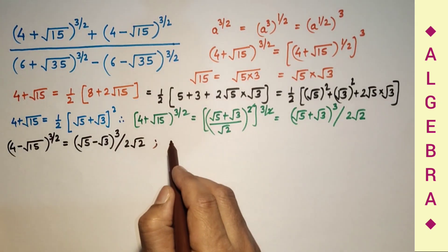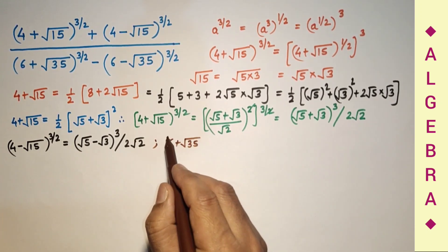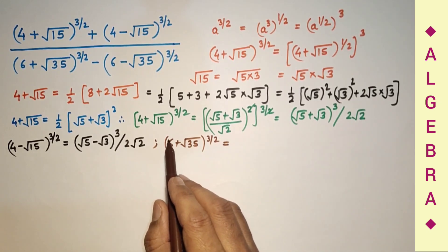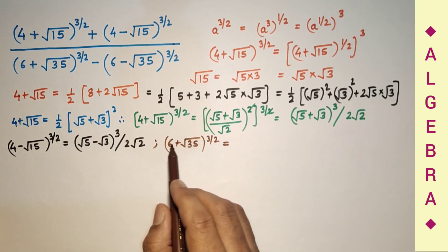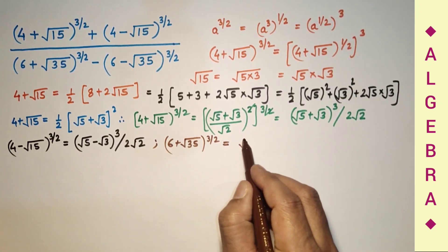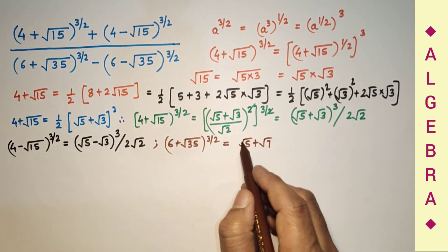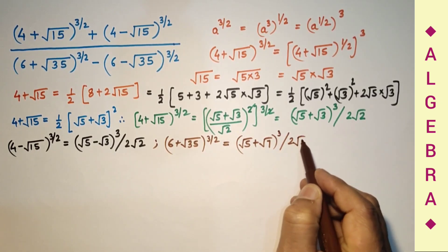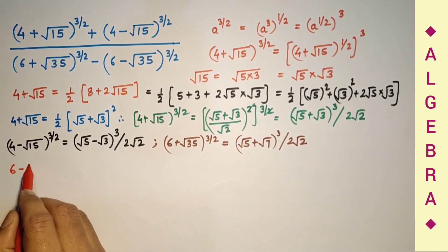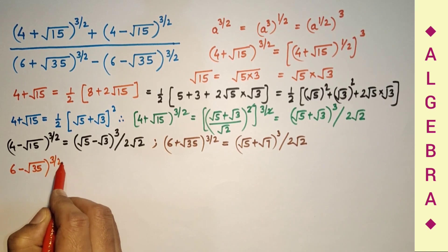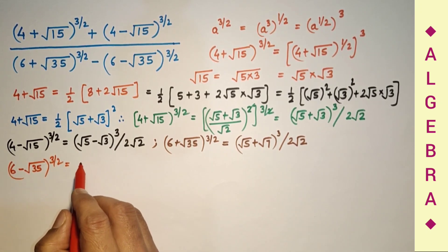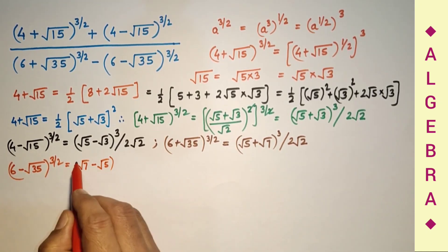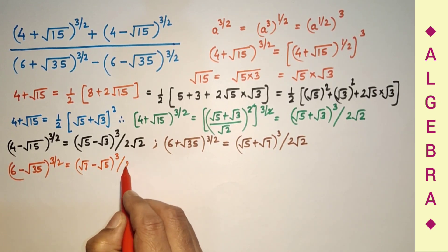(6 plus square root of 35) raised to the power 3/2 can be rewritten using 12 plus 2 root 35, where 35 equals 5 times 7, so we get (root 5 plus root 7) raised to the power 3, divided by 2 root 2. And (6 minus square root of 35) can likewise be rewritten as (root 7 minus root 5)³ divided by 2 root 2.